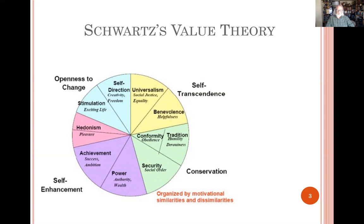This graphic has a little more information in it than the one in our text. In particular, you could see the four categories in general on the outside of the pie chart. This gives us a way to understand that these values that are adjacent to each other are really complementary. So self-transcendence, for example, is about caring for others.